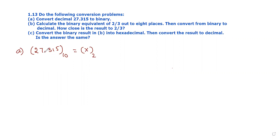So we have 27.315. We separate the integer part and the fractional part: integer part is 27, fractional part is 0.315. For the integer part binary conversion, we divide by 2 repeatedly to get the binary form.